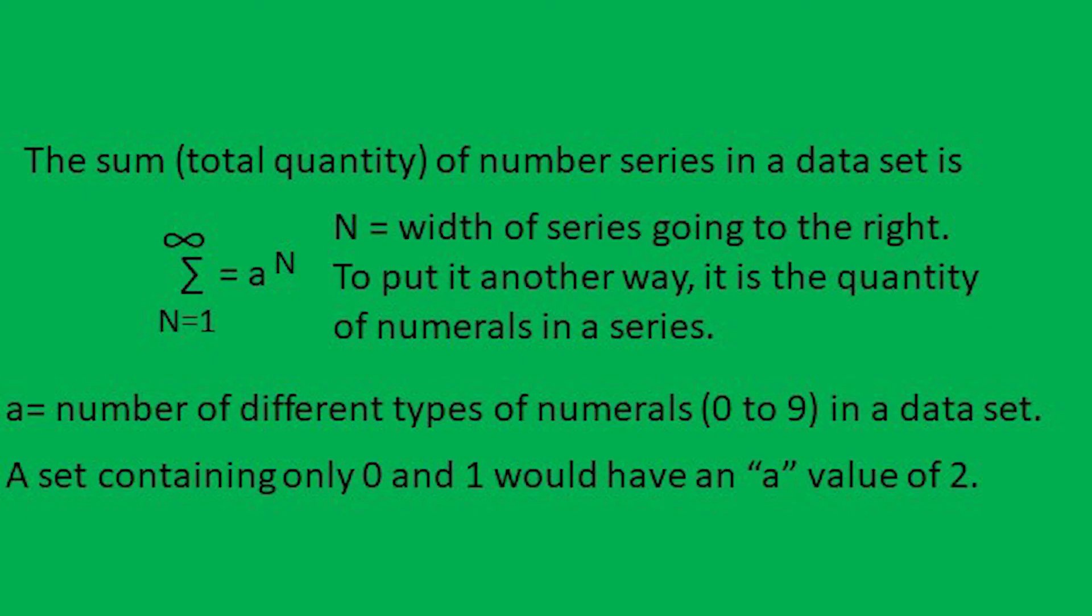This formula states that the sum of data series in a set is equal to the quantity of different types of numerals, 0 to 9, being used in a dataset, raised to the exponential power of how many numerals wide a number series is. For example, two different types of numerals, 0 and 1, would produce an a value of 2. And if a data series is two numerals wide, the total number of data series would be 4.